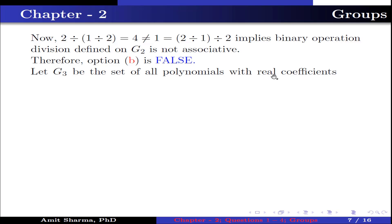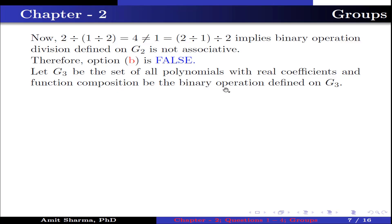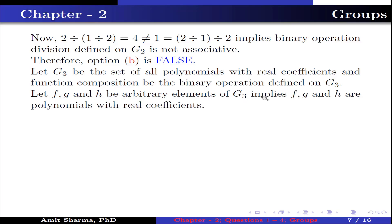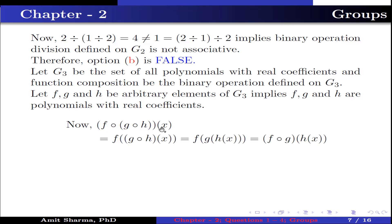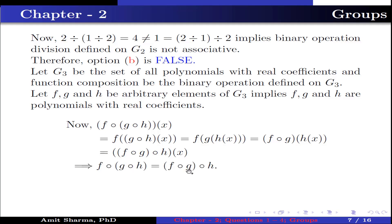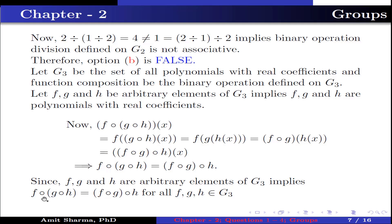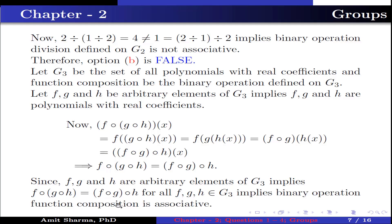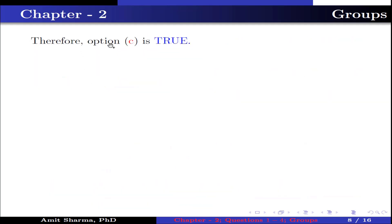Let G3 be the set of all polynomials with real coefficients and function composition be the binary operation defined on G3. Let f, g, h be arbitrary elements of G3, meaning f, g, h are polynomials with real coefficients. Now (f∘g)∘h = f∘(g∘h). Since f, g, h are arbitrary elements, this implies (f∘g)∘h = f∘(g∘h) for all f, g, h belonging to G3. This implies binary operation function composition is associative. Therefore option C is true.